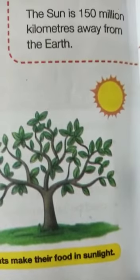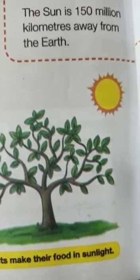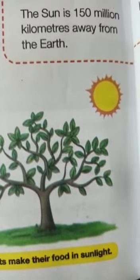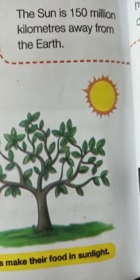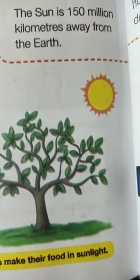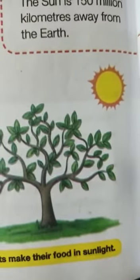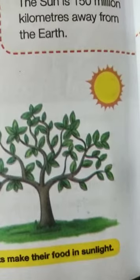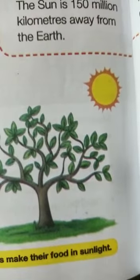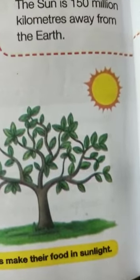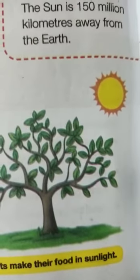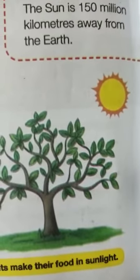Plants use sunlight to make their food. Sunlight helps our body to make vitamin D. The Earth would be very dark and cold without the Sun, and nothing would be able to live on the Earth.